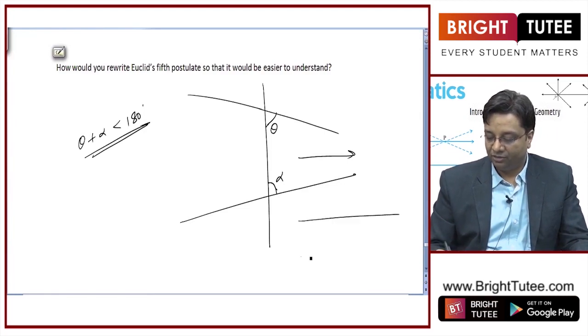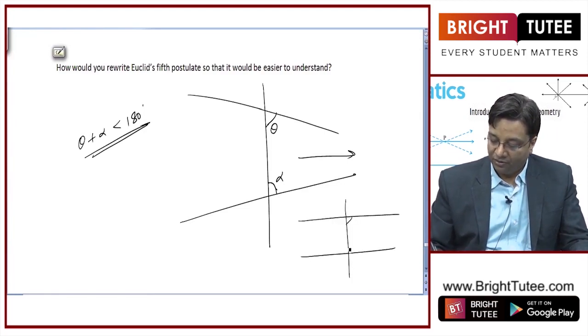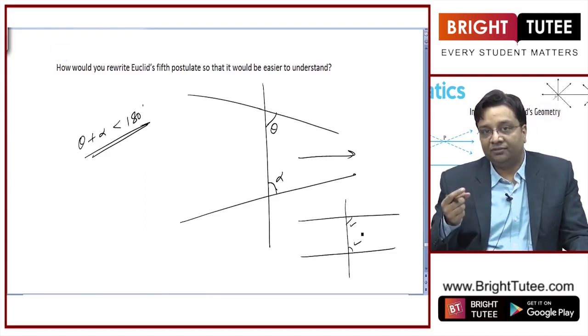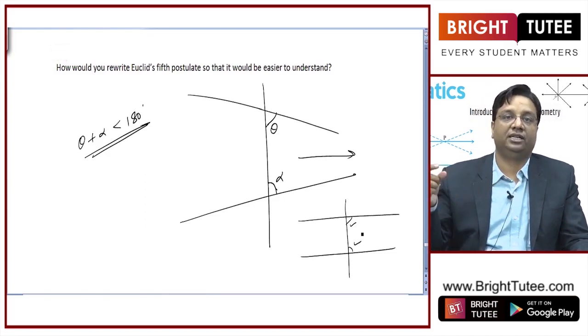Or you can start with the definition of parallel lines that sum of co-interior angles is equal to 180 for the lines to be parallel. If it is lesser than 180, the lines will meet on that side.